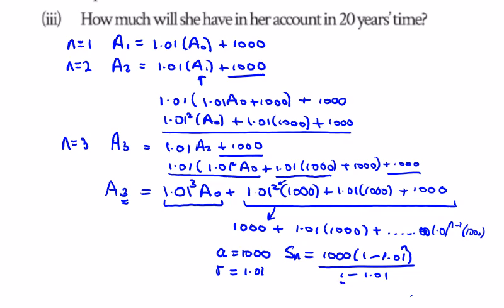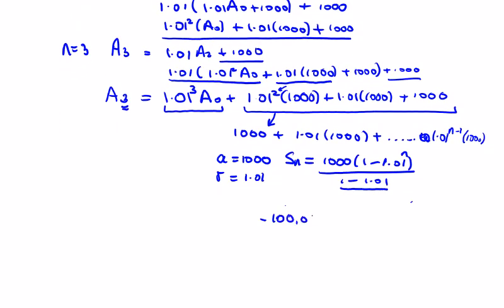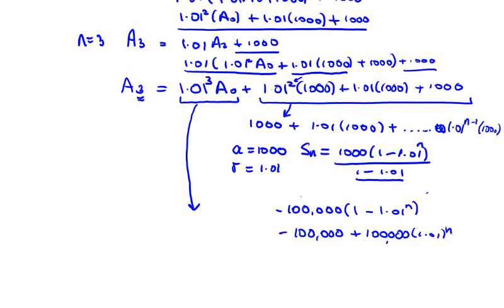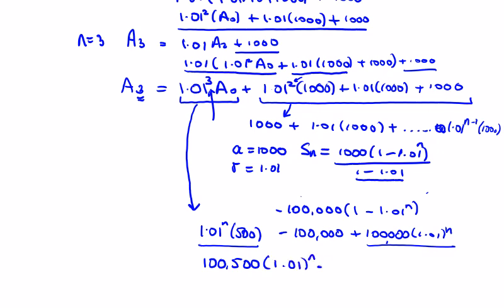Dividing a thousand by minus 0.01 gives minus a hundred thousand, plus a hundred thousand times 1.01 to the power of n. Simplifying, and bringing back the initial term — we were told a_0 was 500 — we get 1.01^n times 500. So we have a_n equals 100,500 times 1.01^n minus 100,000.